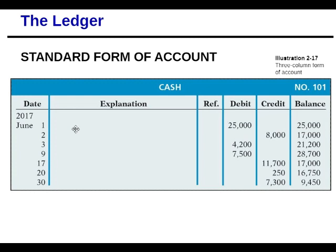There is an explanation column where you can explain what happened — bought something, issued stock — but that already happens in the journal, so this column is often blank. Then there is a reference column. The reference in the ledger is different from the journal: the reference for the ledger comes from the journal page numbers, whereas the reference in the journal comes from the chart of accounts number for that account.